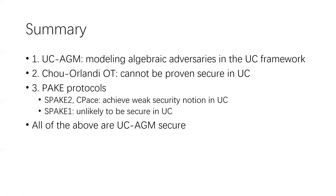In summary, we make three major contributions. First we propose the UC-AGM framework, which models an algebraic adversary in UC. Then we showcase two applications. For Chou and Orlandi OT protocol, it cannot be proven secure in standard UC because of the impossibility result. For SPAKE1, there's no impossibility result, but it is also unlikely to be UC secure. For SPAKE2 and CPace, it only has a weak security guarantee in UC. For all the above protocols, we prove that they are UC-AGM secure. For Chou and Orlandi OT and SPAKE1, we prove UC security in the AGM, which were unknown previously. For SPAKE2 and CPace, we achieved stronger security notions.